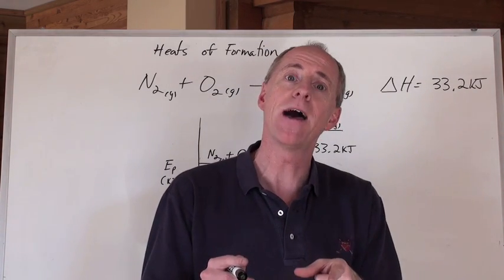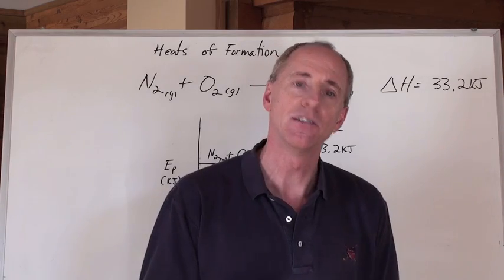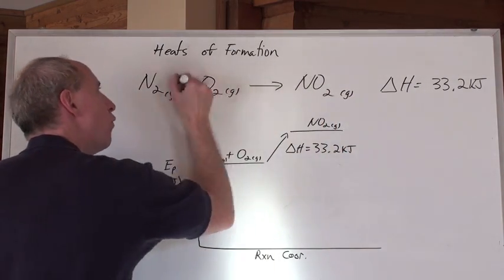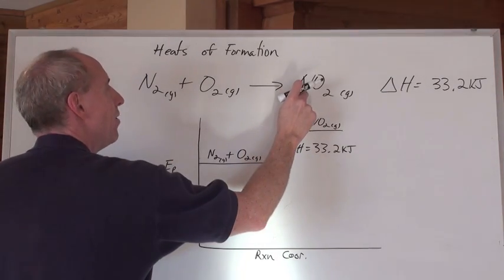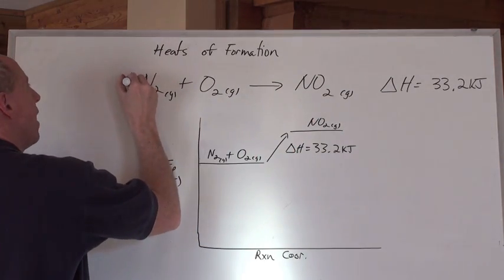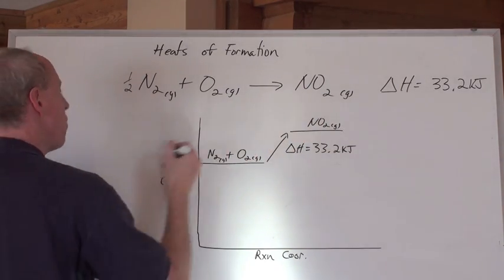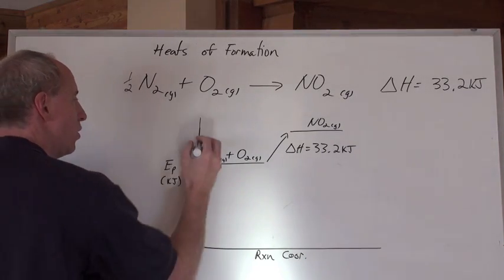So we write the equation. That's the NO2 forming from its elements. Oh hey, look, you've got one here, so you've got to have a half here. You've got two of those, you've got two of those, so you've got one of those. That's now the balanced reaction for this right here, where we put a half in front of the N2. We're going to put a half right here in this graph.